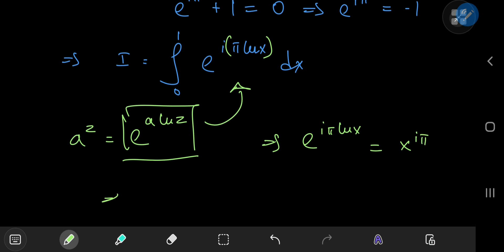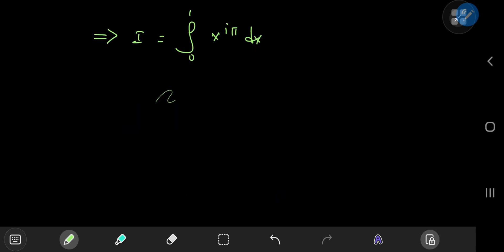Okay cool that means our integral i sorts out to the integral from 0 to 1 of x to the i times pi dx, which is of course a pretty simple integration to carry out.